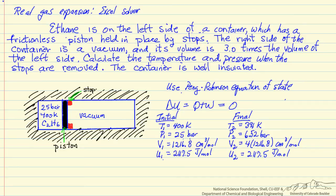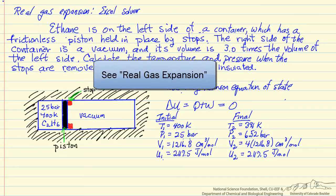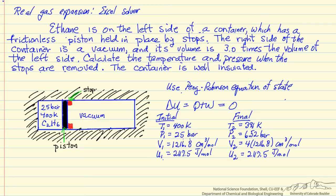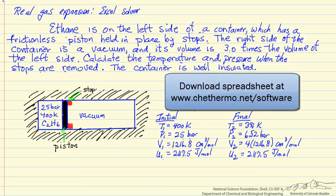This is an example that is presented in a separate screencast where we expand a real gas from a high pressure into a vacuum. If this were an ideal gas there would be no temperature change, but what we want to do is calculate using the Peng-Robinson equation of state what the final temperature would be and the final pressure, and we will use a spreadsheet from the Elliott and Lear Thermodynamics book.